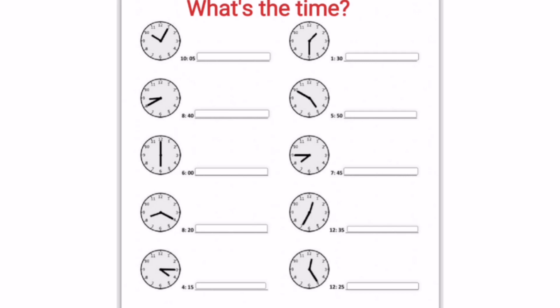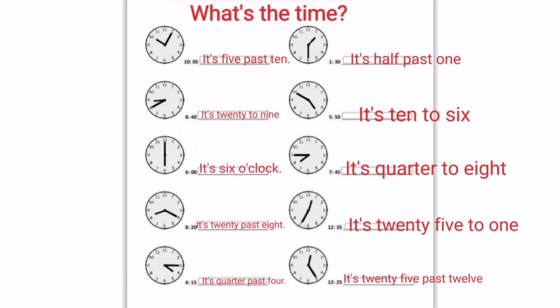Next exercise, and it is the last one: What's the time? Let's see the answers. First one: it's 5 past 10. Next, it's 20 to 9. Third, it's 6 o'clock.